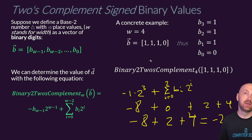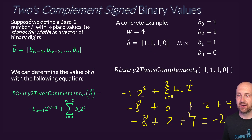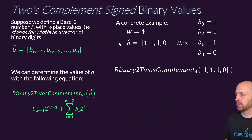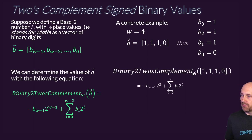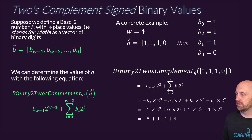Two's complement winds up being what every programming language and every modern system uses for signed integer values by default. This is the de facto standard for signed integer representation. In the slides, you'll see that exact same process in notes and you can follow along there in the same detail we just did.